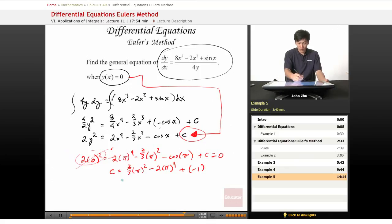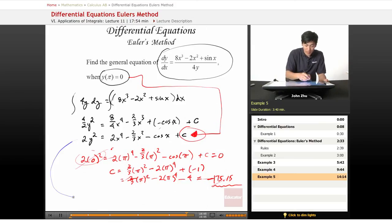So we get 2 thirds pi squared minus 2 pi to the 4th minus 1. And if we solve for this, we'll get something like negative 175.15.